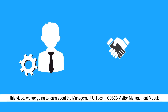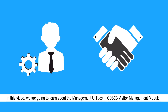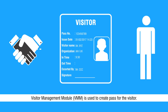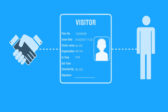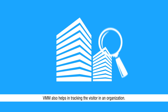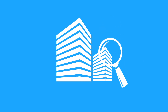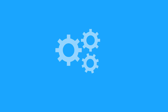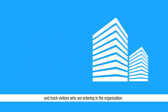Hi friends. In this video we are going to learn about the management utilities in Cosec Visitor Management Module. The basic requirement is a Cosec Visitor Management License. The Visitor Management Module (VMM) is used to create a pass for the visitor and helps in tracking the visitor in an organization. Cosec Visitor Management Utilities help the user execute various operations and track visitors entering the organization.